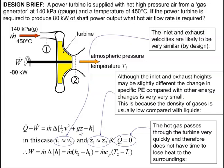With q-dot zero, the gz term zero (no height change), and no change in velocity, the equation simplifies. The kinetic and potential energy terms disappear, leaving w-dot equals m-dot times delta-h. Since at constant pressure delta-h equals cp times delta-T, we get w-dot equals m-dot times cp times delta-T.